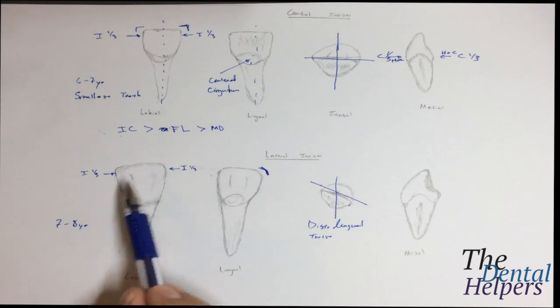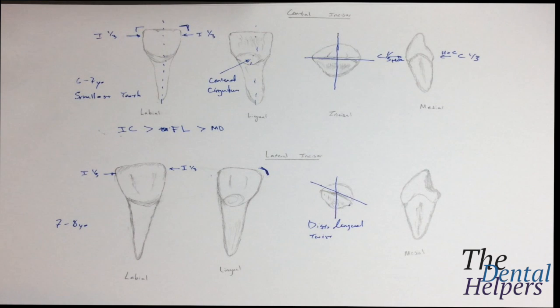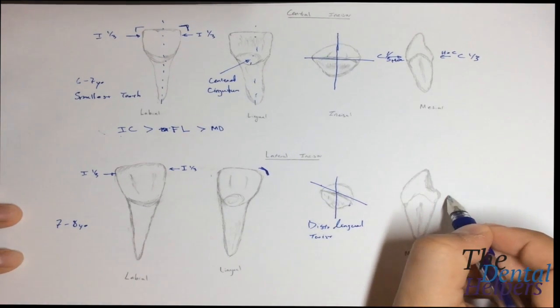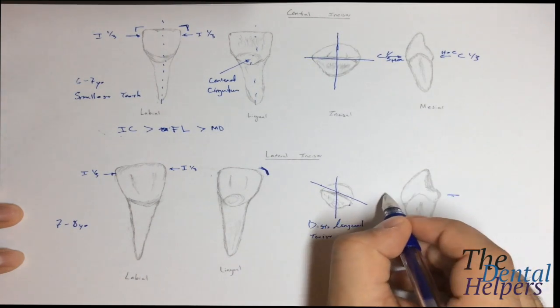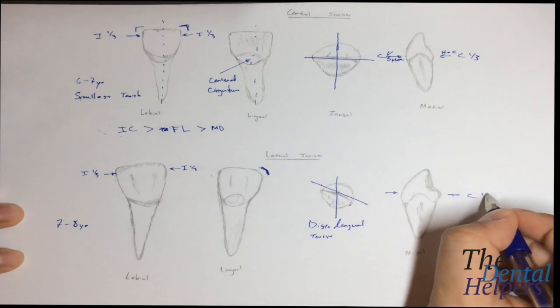Again, this is going to have the three mamelons, as well as the four developmental lobes. Fairly easy to remember because it's all the same. Now, in terms of the height of contour, it's going to be exactly the same as before, where they're both going to be in the cervical one-third.